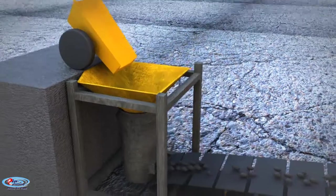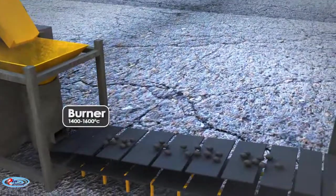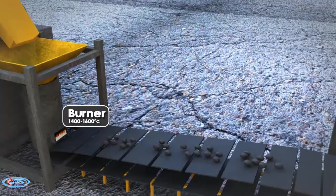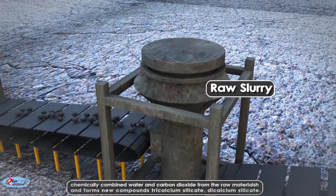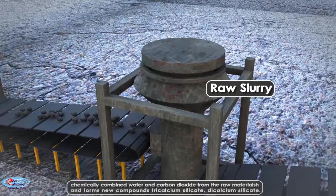Flame jets are at the lower end and heat all the materials in the kiln to high temperatures that range between 2700 and 3000 Fahrenheit, 1480 and 1650 Celsius. This high heat drives off, or calcines, the chemically combined water and carbon dioxide from the raw materials and forms new compounds.